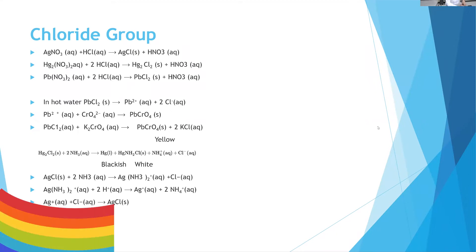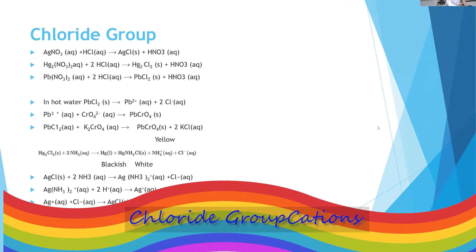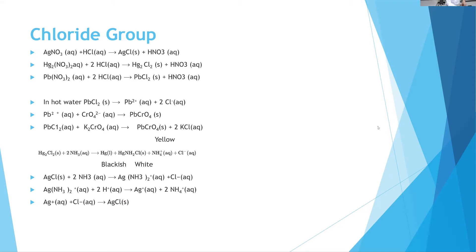The first group of cations we are going to analyze qualitatively is the chloride group. Based on the solubility rules, chlorides are all soluble with exceptions: silver chloride, lead chloride, lead 2+, and mercury 1 (Hg₂²⁺). If you have the chloride of these compounds, they will not be soluble — they will precipitate.